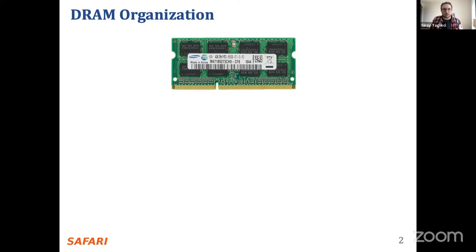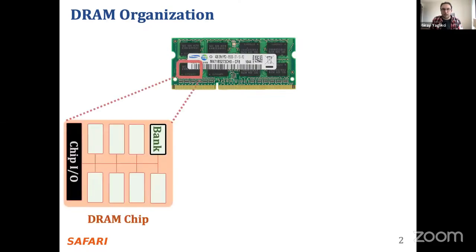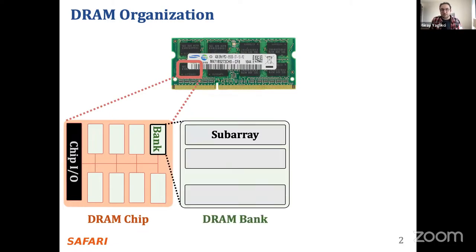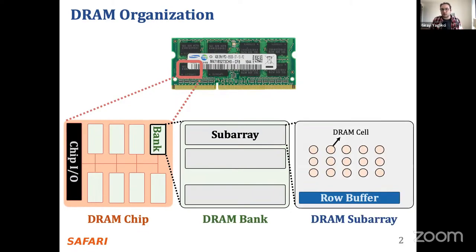I'll start with a brief overview of DRAM organization. This is a DRAM module used as the main memory in devices today. It has several chips, and within each chip we have multiple banks. These banks are organized as an array of subarrays, and within each subarray we have a two-dimensional array of DRAM cells, organized as rows and columns. When you want to access data, you access it internally in a DRAM row granularity.